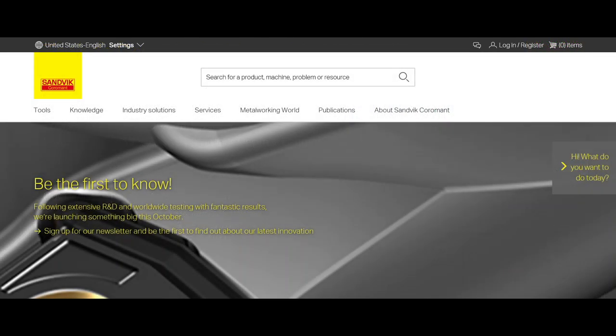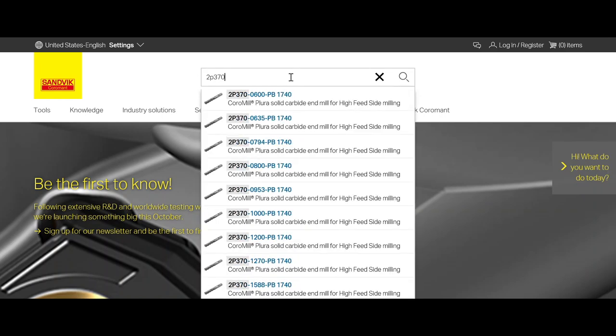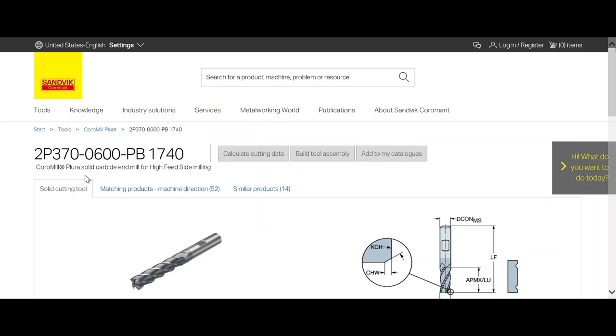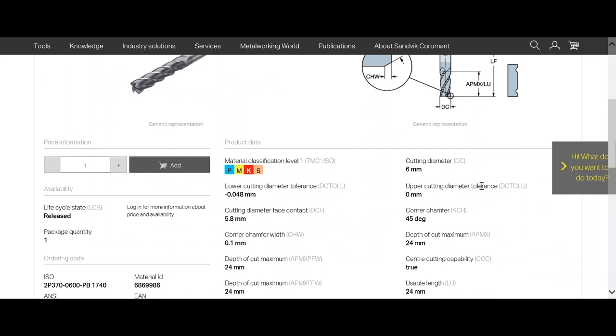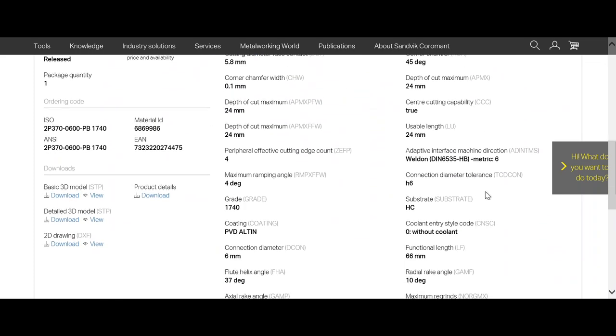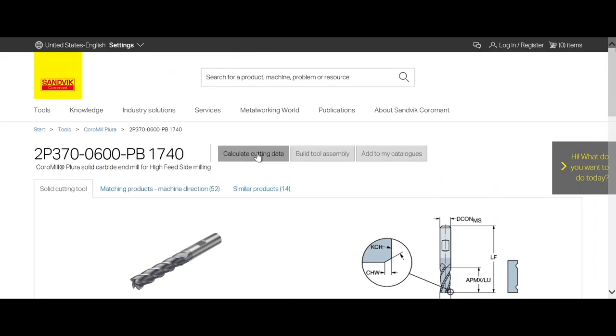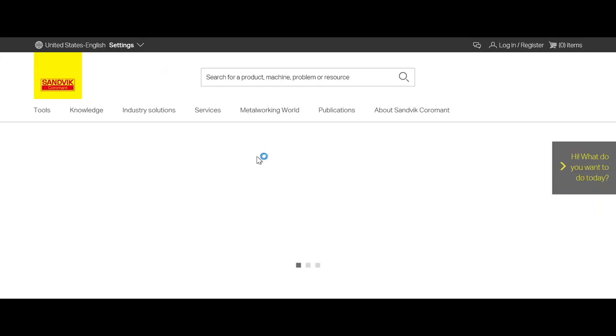We will begin with our tool by entering the part number on the search function. We see we have here a CoraMill Plura solid carbide end mill for high-feed side milling. Right below, all the geometrical information is for all of our tools including step models 2D and 3D. Now we continue with calculating cutting data.